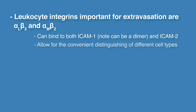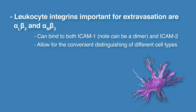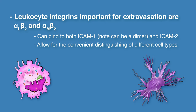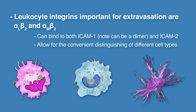Integrins also allow for the convenient distinguishing of different cell types. Dendritic cells, macrophages, and monocytes feature different integrin alpha chains, and thus display distinct beta-2 integrins on their surface.